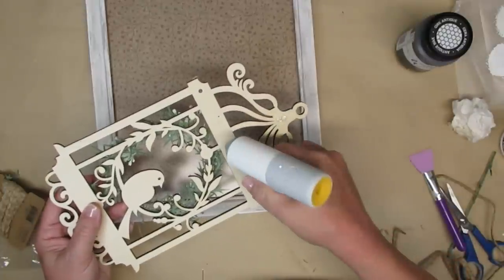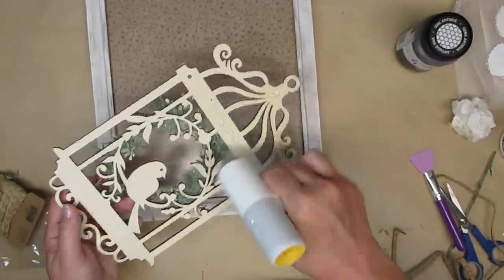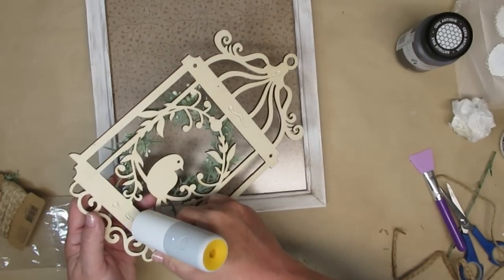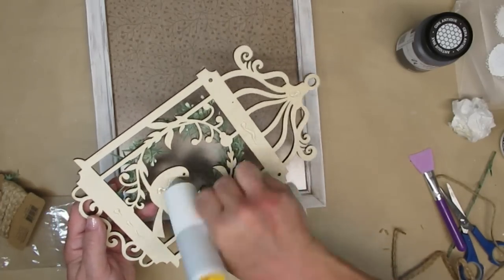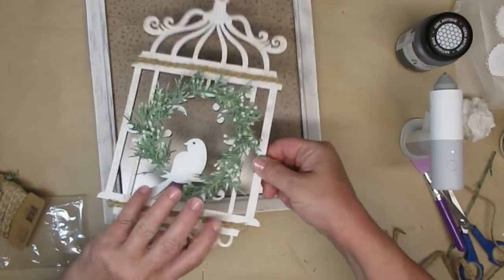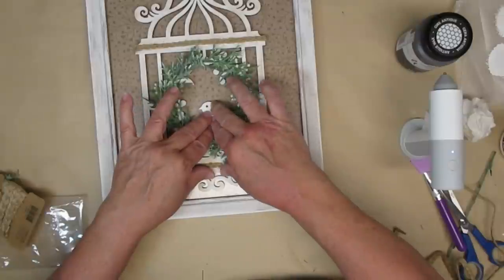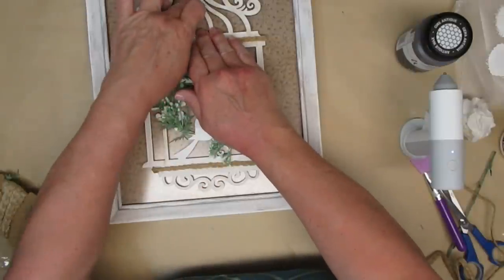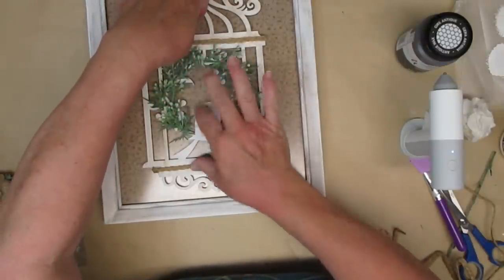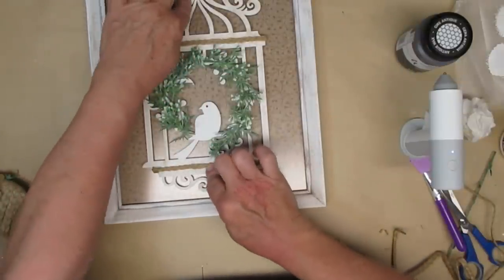And now that everything is complete I'm going to be adding some hot glue to the back of my little birdcage decoration and I'll be gluing it right into the center of the frame. And I think this turned out really beautiful. It has a vintage look and I think it's going to make someone very happy in their home.